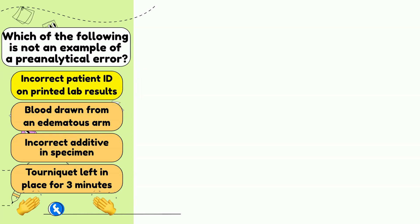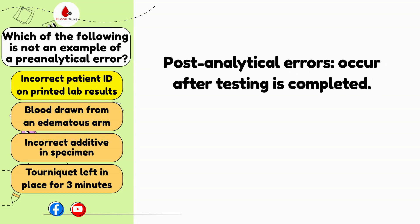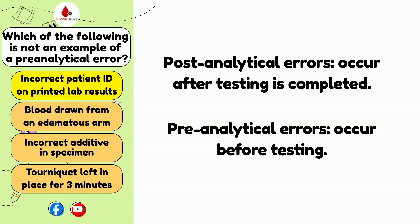An incorrect patient ID on printed lab results is an example of a post-analytical error, because it occurred after the testing was completed. Pre-analytical errors occur before testing and may include a wide range of physiological factors such as exercise, diet, age, drugs, environment, altitude, position, gender, pregnancy status, and stress. Venipuncture factors include both the patient's conditions like burns and IV fluids, or technical errors such as blood drawn from an edematous arm or a tourniquet left on for too long.